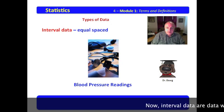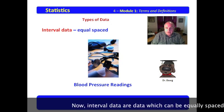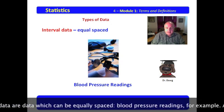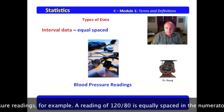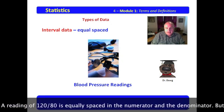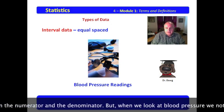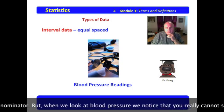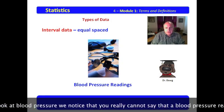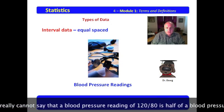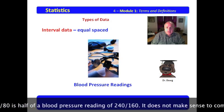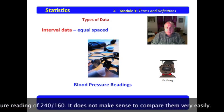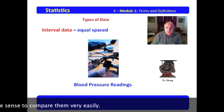Now, interval data are data which can be equally spaced. Blood pressure readings, for example. A reading of 120 over 80 is equally spaced in the numerator and denominator. But when we look at blood pressure, we notice that you really can't say that a blood pressure of 120 over 80 is half of a blood pressure reading of 240 over 160. It doesn't make sense to compare them very easily.